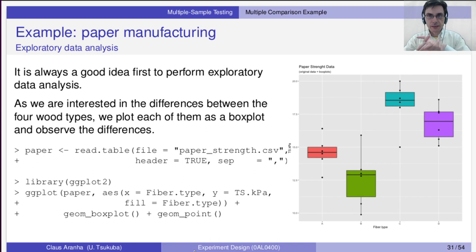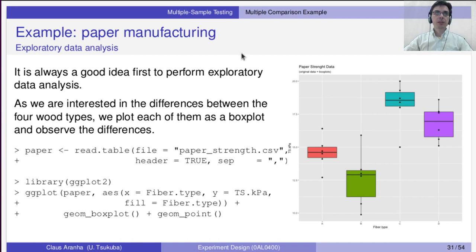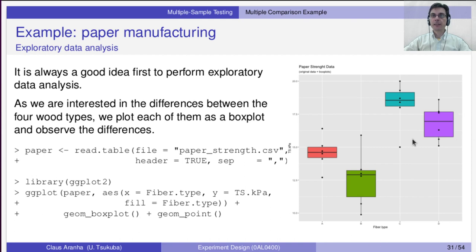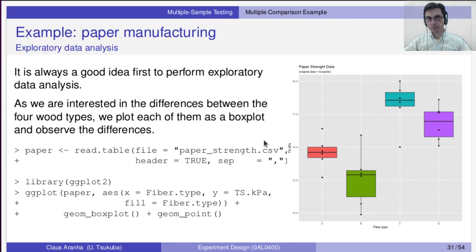Before doing the statistics, it is always good to do a descriptive analysis first. We obtain six observations for each paper type and plot a box plot. From the box plot, we can already see differences: paper types A and C have very low variation; B and D have higher variation. Paper D shows a somewhat uneven distribution worth investigating. Paper C has a clear outlier that should be checked — whether it is expected or something special happened.